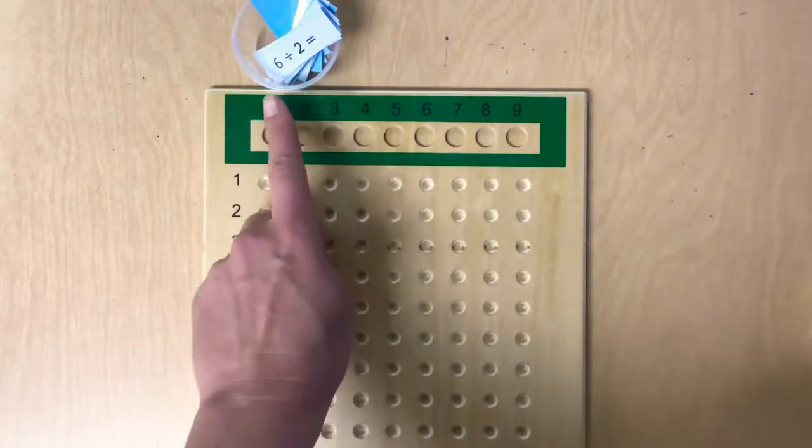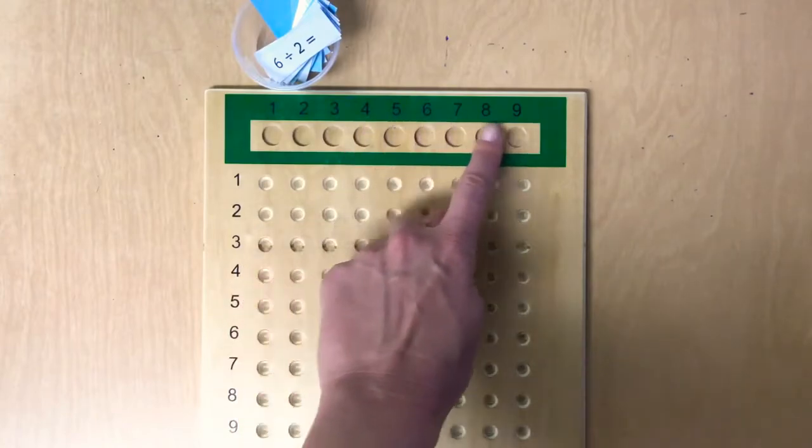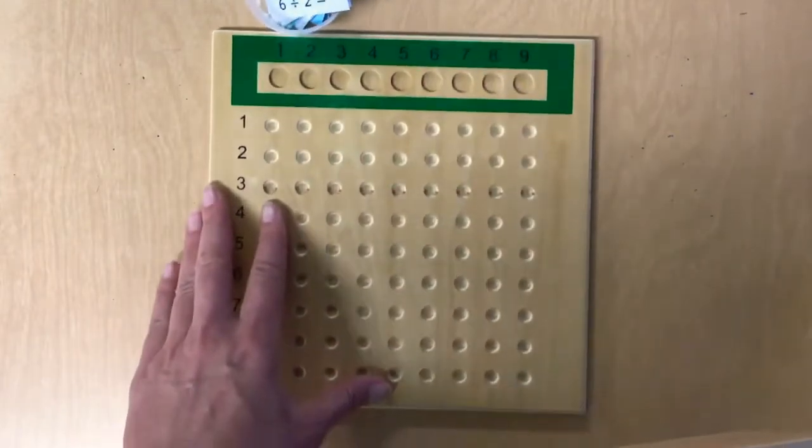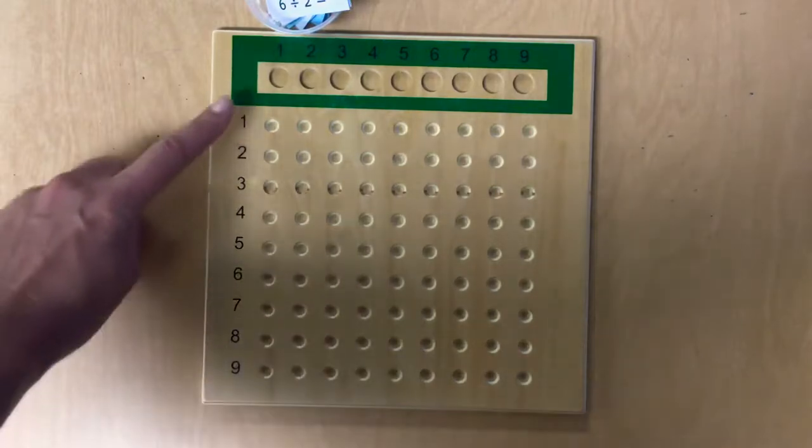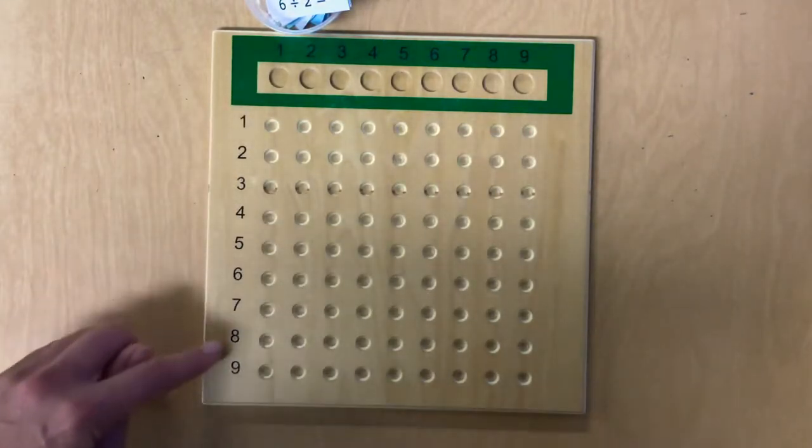So here we have our board with the numbers 1, 2, 3, 4, 5, 6, 7, 8, and 9 across the top, and down the side we also have 1, 2, 3, 4, 5, 6, 7, 8, and 9.